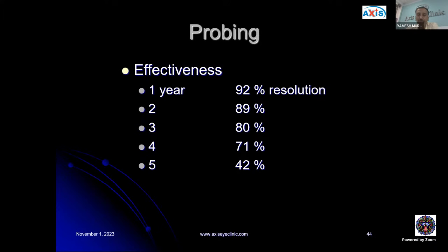The effectiveness of probing by age: at one year, 92% of cases resolve; at two years, 89%; at three years, 80%; at four years, 71%; and at five years, only about 42%. Hence the importance of early probing for children.